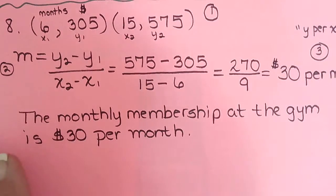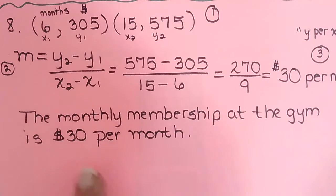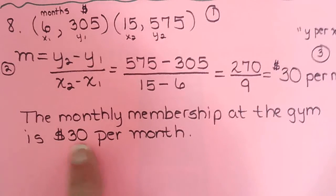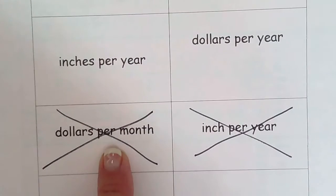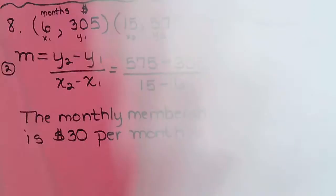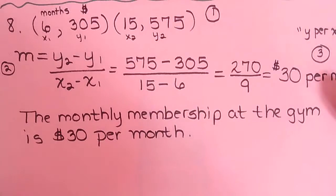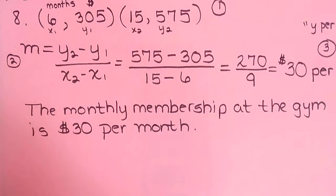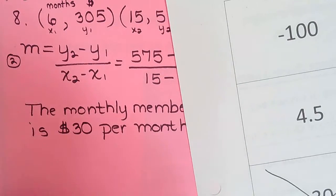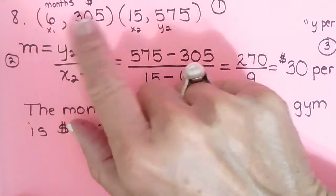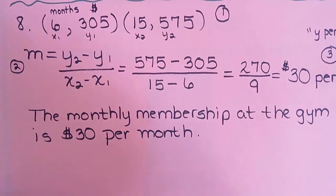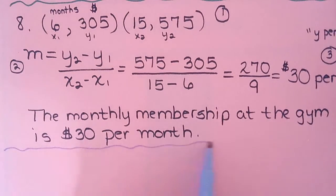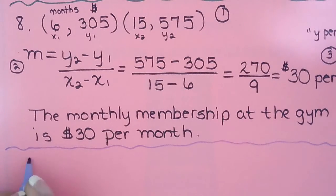We had just finished number eight and the only thing we didn't do was cross out our 30 and cross out dollars per month. Hopefully between videos you got to work some of these. I'm just going to go through them and see how you did. It's kind of nice when you have the answers because if your answer is not on the sheet, you know you made a mistake. It's usually about order — students didn't follow time first, dollar second. That's pretty much a given: time is going to be first.